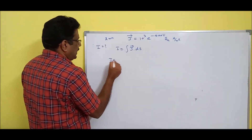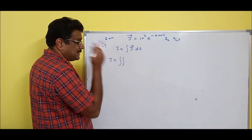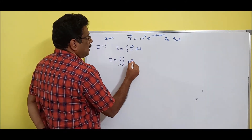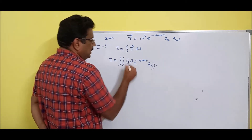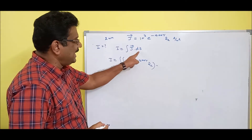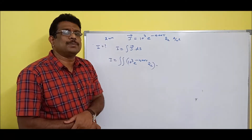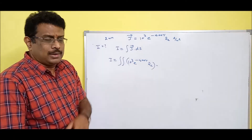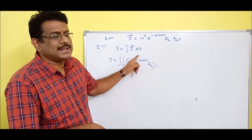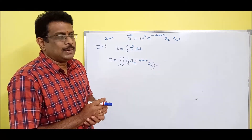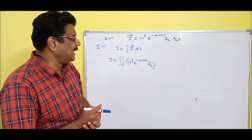Recall: it is dS — elemental area — so this is a double integration. The value is 10³ e^(−400R) Az cap dot dS. What is dS here? Recall that table from the beginning of the subject. I need dS in cylindrical coordinates because R and Z are present — cylindrical coordinate.